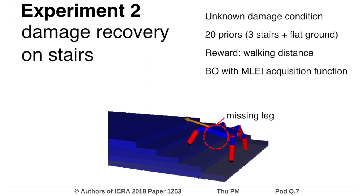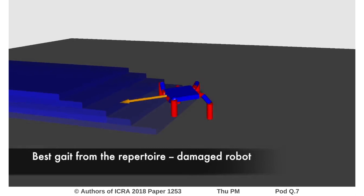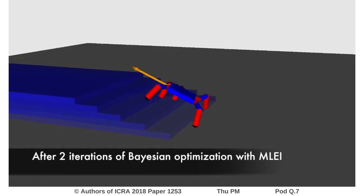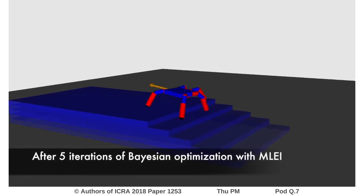There are 20 priors to choose from. Suppose that the robot has to climb a new kind of stairs. At the first iteration of Bayesian optimization, the robot tries its best gait among the priors, but it fails because of the novelty of the situation. At the following iteration, MLEI selects jointly the most likely prior and the most promising gait, and the robot performs better. After only 5 iterations, the robot has learned to climb the stairs.